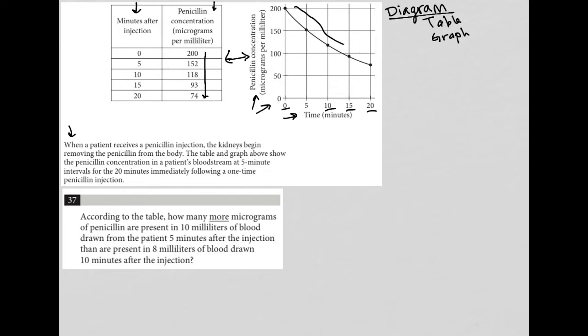So question number 37 says, according to the table, so we're only focused on the table, how many more micrograms of penicillin are present in 10 milliliters of blood drawn from the patient five minutes after the injection than are present in eight milliliters of blood drawn 10 minutes after the injection?